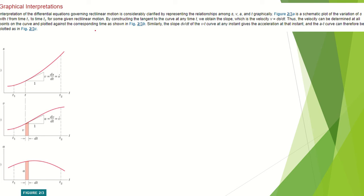The velocity can be determined at all points on the s-t curve and plotted against the corresponding time. Similarly, the slope dv/dt of the v-t curve at any instant gives the acceleration at that instant, so the a-t curve can therefore be plotted as shown. These are the three different plots: the s-t curve, the v-t curve, and the a-t curve.